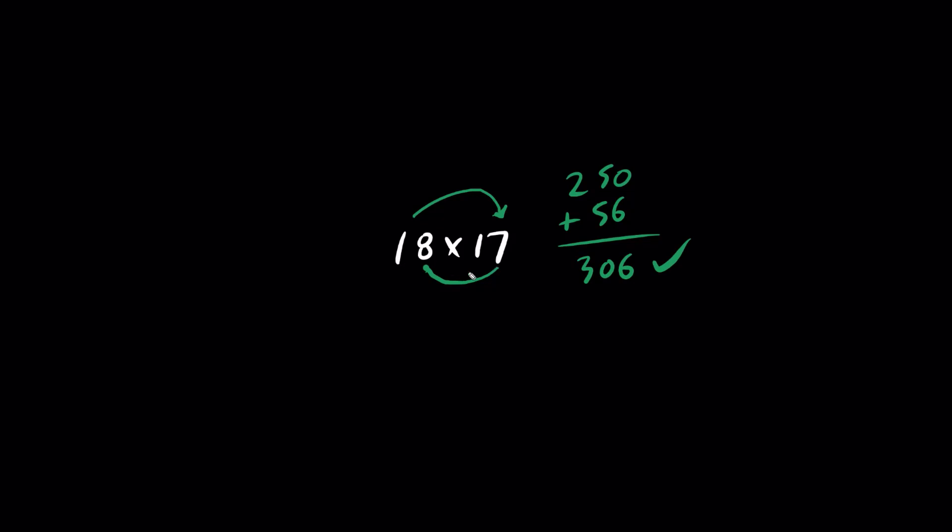Another way of doing this is to memorize your timetables. What is 17 times 17? 17 times 17, if you memorize it, is 289. And we can add one more 17. That's another way of thinking about it, which is also 306.